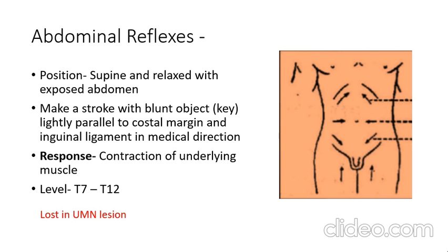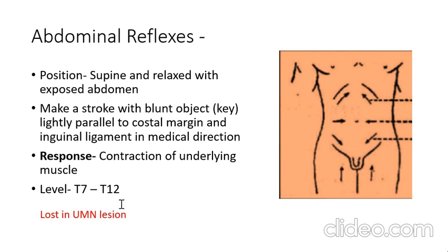Next is the abdominal reflex. The subject should be supine and relaxed with abdomen exposed. Make a stroke parallel to the costal margin and inguinal margin with a blunt object, and you can see the underlying muscle contraction. The level is T7 to T12. These responses are lost in upper motor neuron lesion.